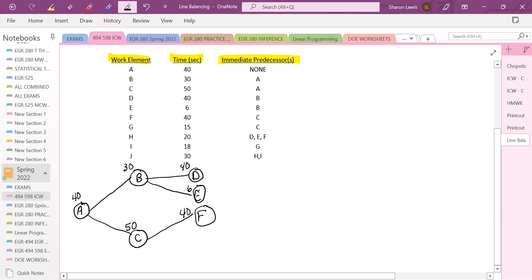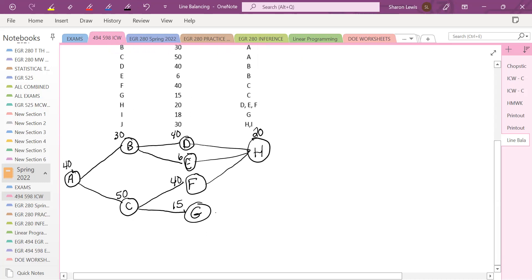And then G can start when C is done. So we can put G down and G is 15 seconds. And then we have H. Well, H needs D, E and F. So all three of those have to be done before H can begin. And H is 20 seconds. And then we have I, and I needs G to be done. And I is 18. And then finally, we have our last task, J. Everything has been done. H and I are complete. So J can begin. And it's 30 seconds. That's our precedence diagram.